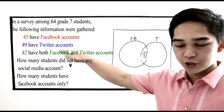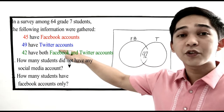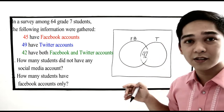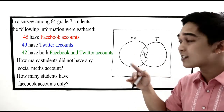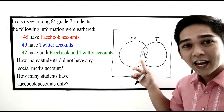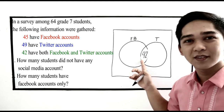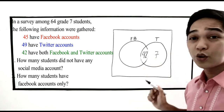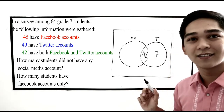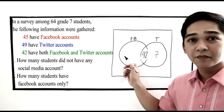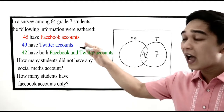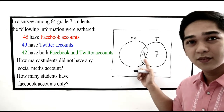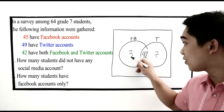Second information: 49 have Twitter accounts. For Twitter, there are 49 students. So from 49, we subtract the intersection: 49 minus 42 equals 7. We write 7 here — these are the students who have Twitter accounts only. Next, we have 45 with Facebook accounts: 45 minus 42 equals 3. So we place 3 here for Facebook only.